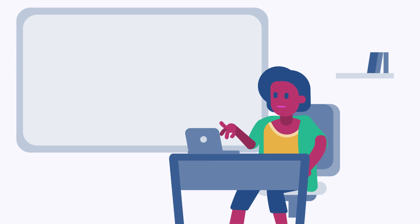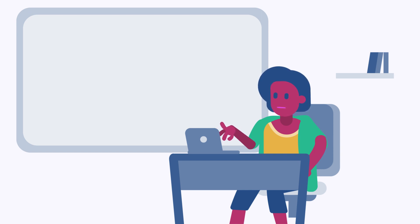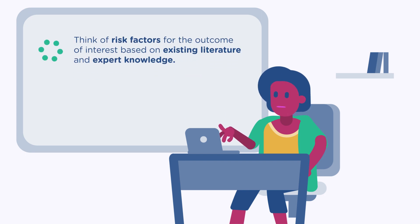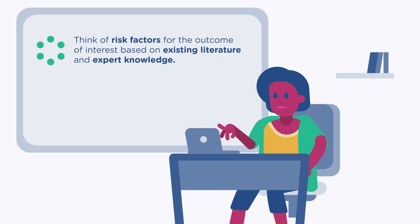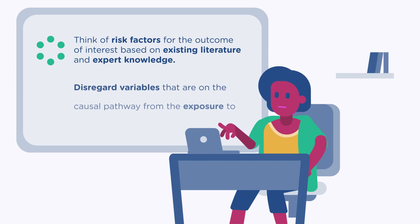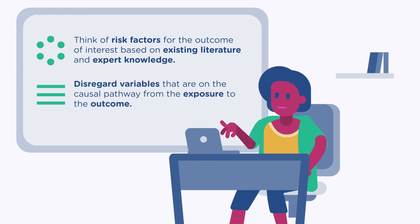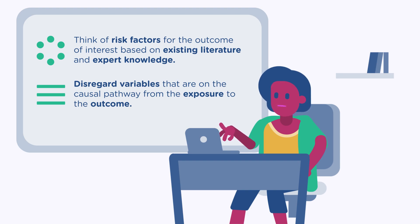Generally speaking, to assess possible confounding factors in a study: first, think of risk factors for the outcome of interest based on existing literature and expert knowledge; and second, disregard variables that are on the causal pathway from the exposure to the outcome.